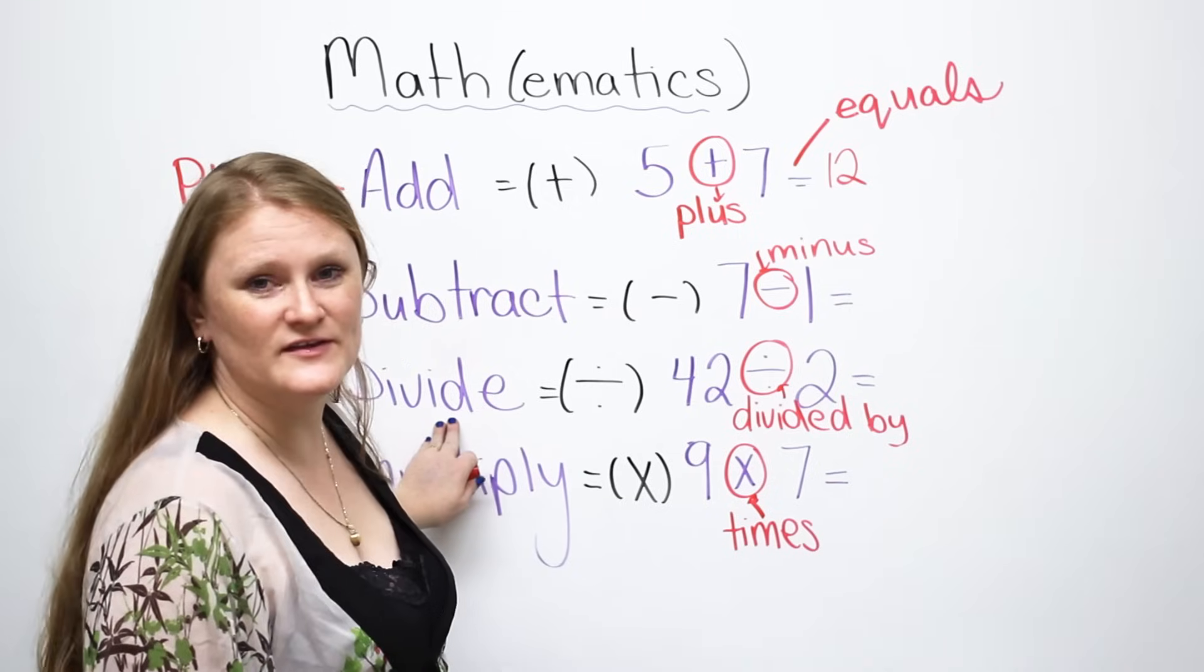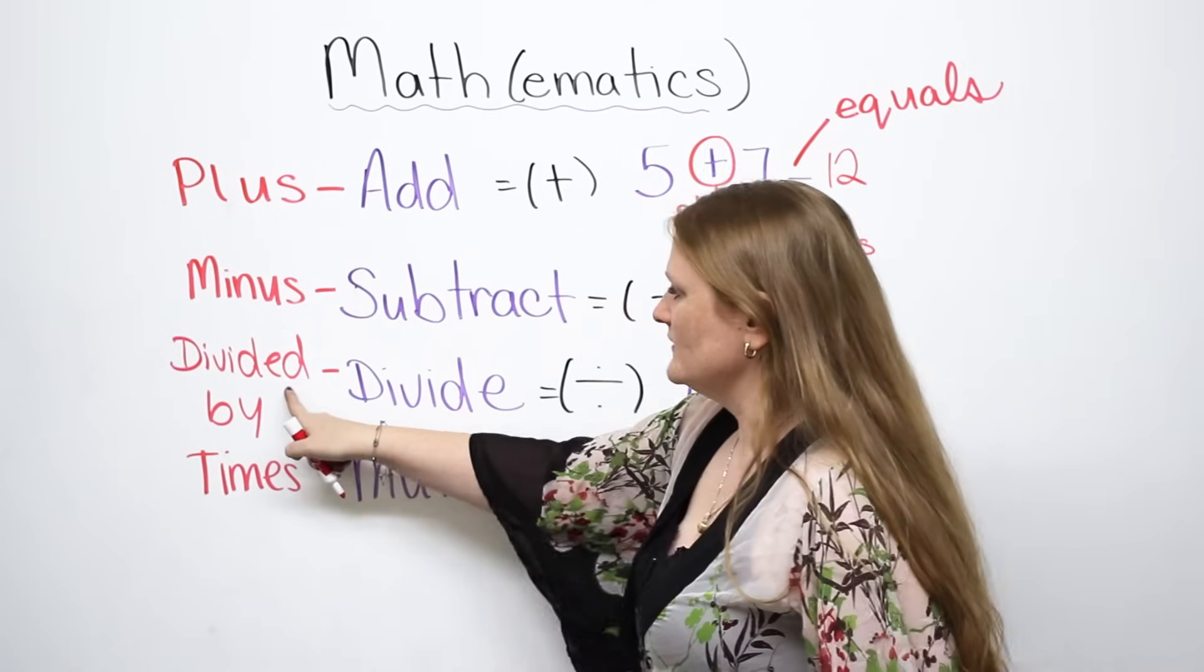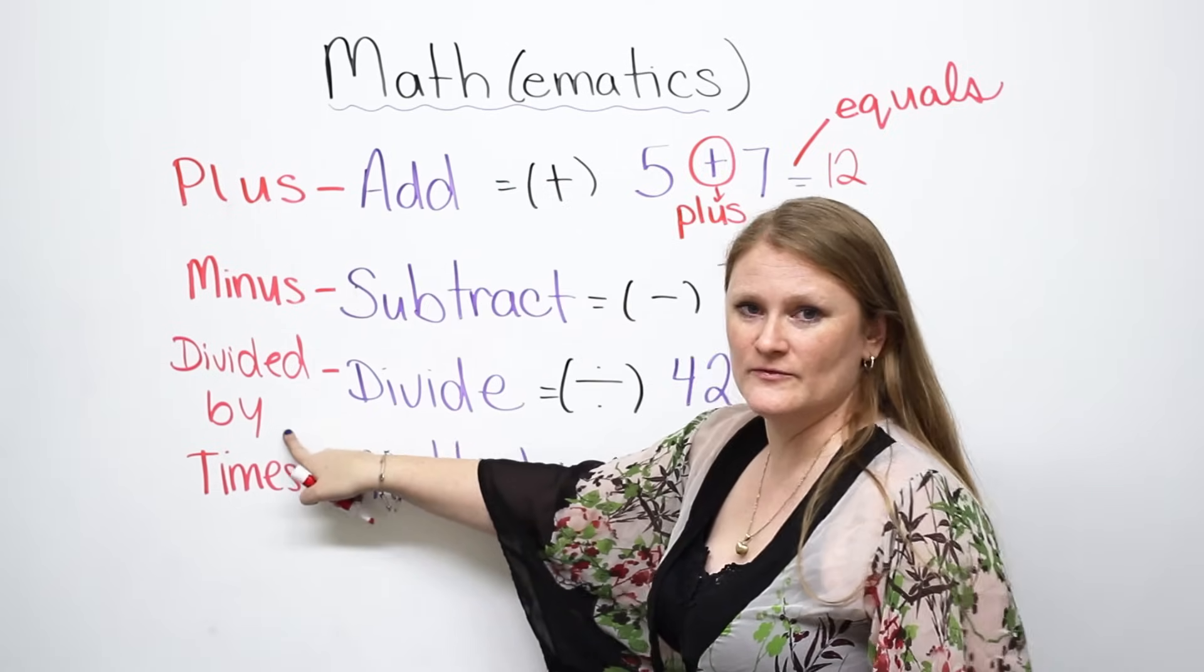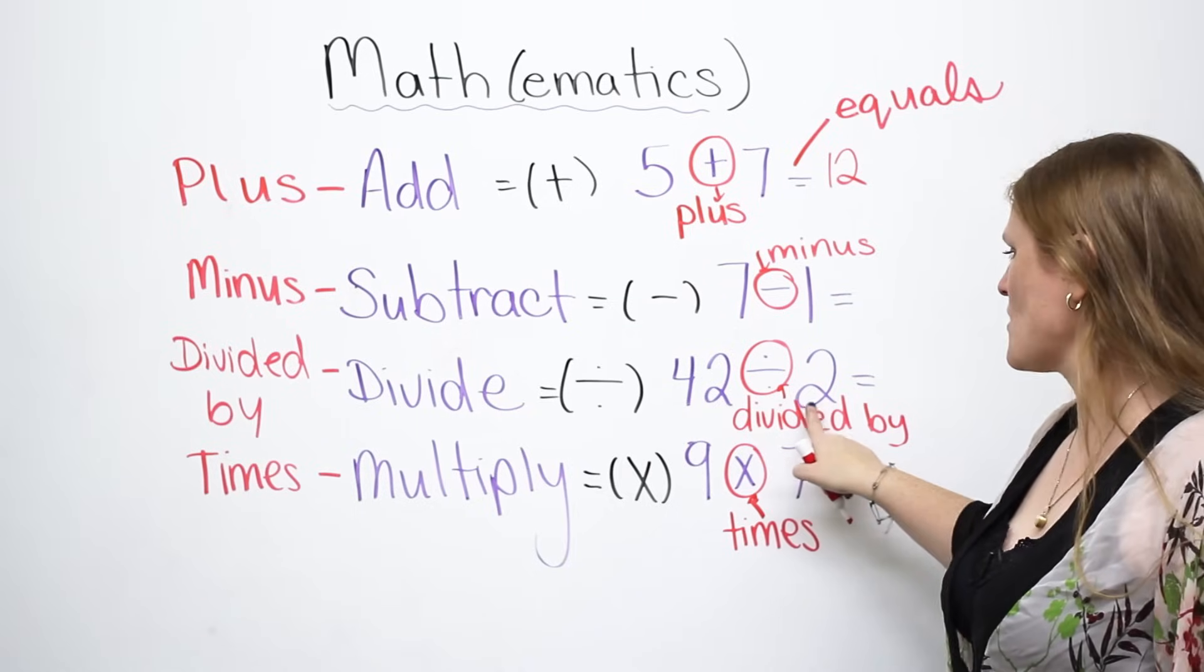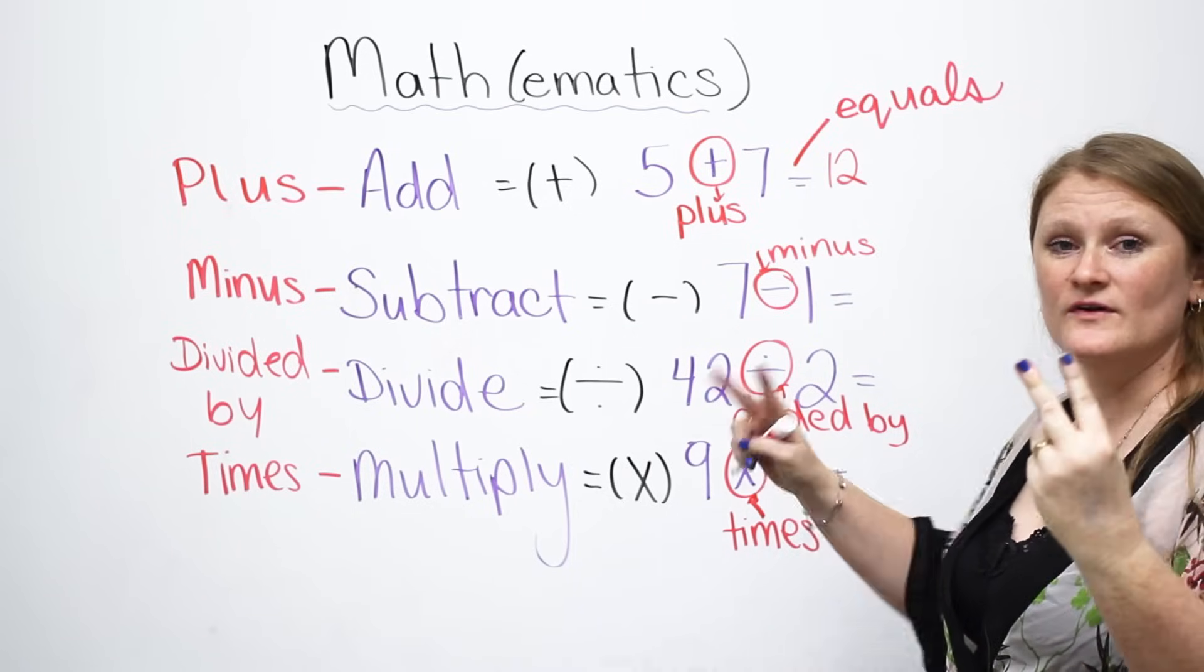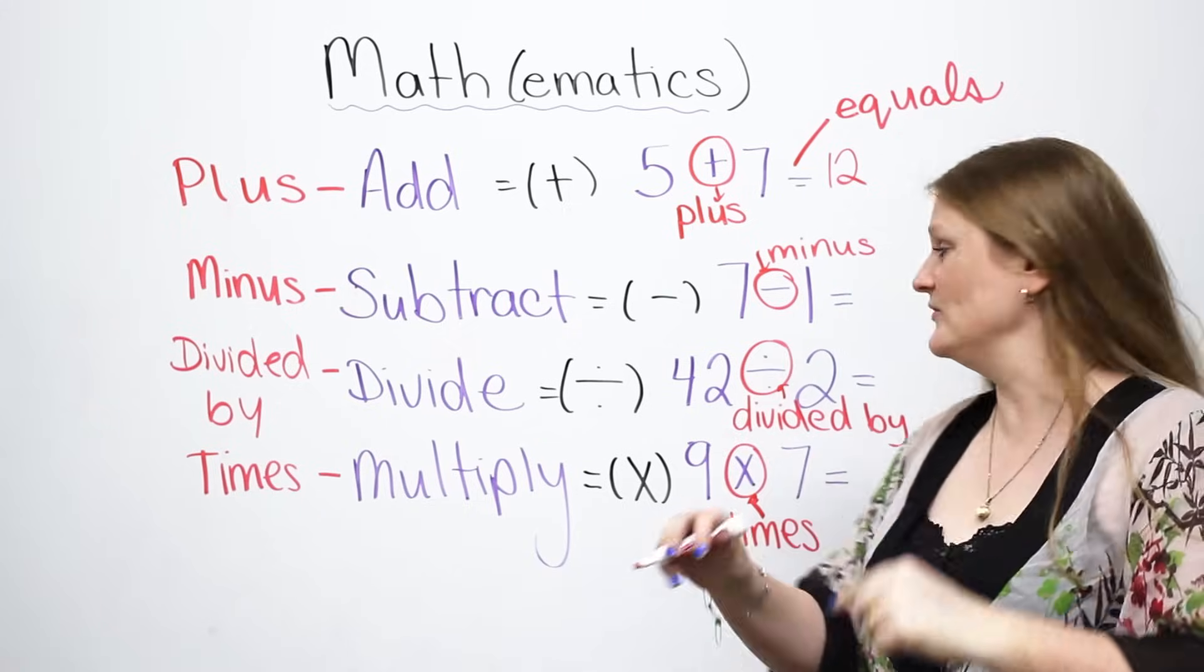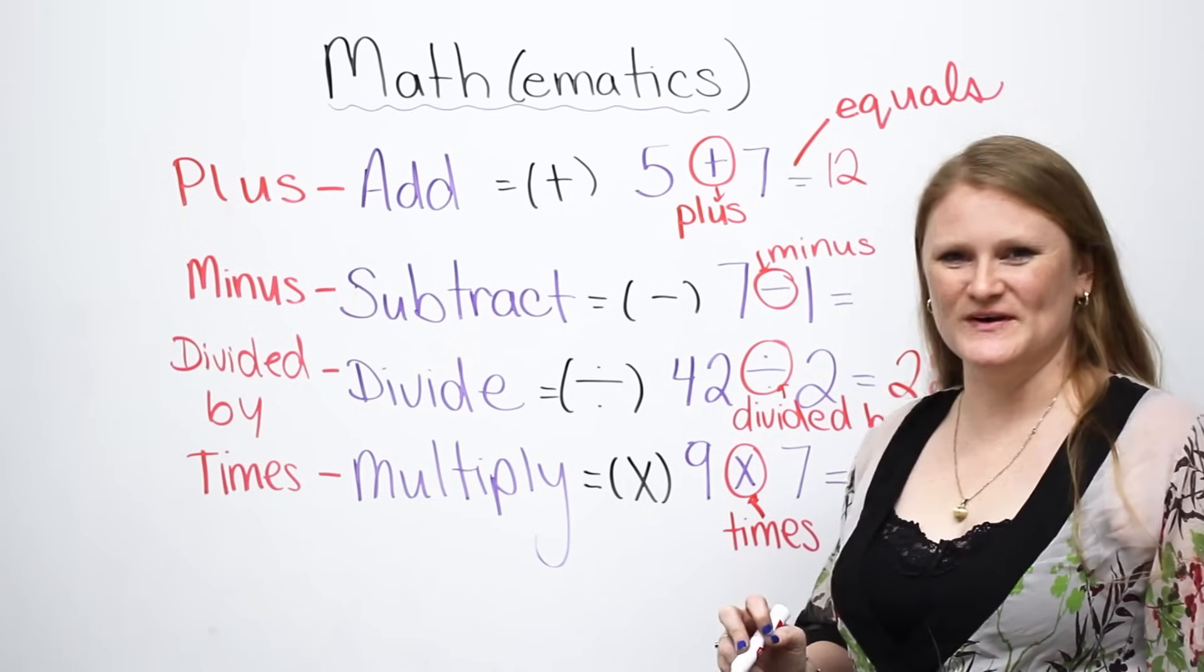The next one is divide. This is closer. We say, divided by. So, we say, 42 divided by two. This one's mine. 42 divided by two is 22.